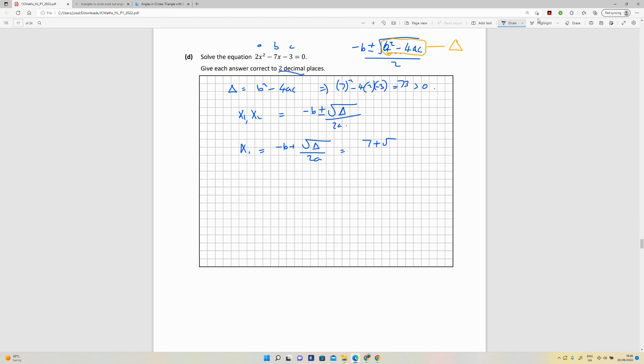So when I calculate that out I'm going to get 3.89 on my calculator. That's it to two decimal places. And for x2, this is going to be minus b minus the square root of theta all over 2a, so that's going to be 7 minus the square root of 73 all over 4, which is going to give me an answer of negative 0.39. So those are my answers for x, those are my two answers for x. Okay.